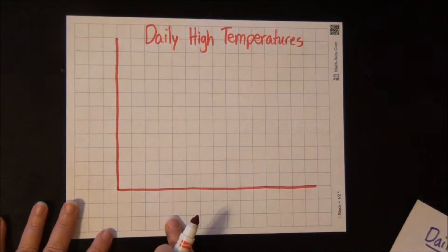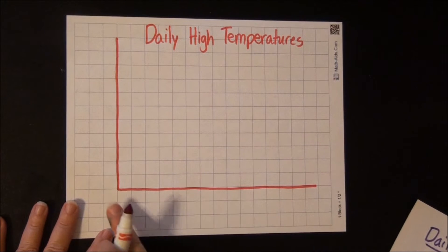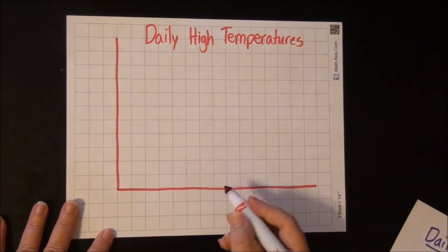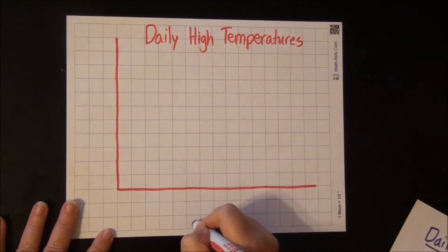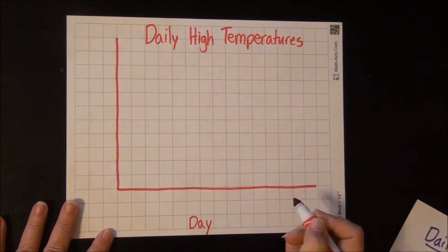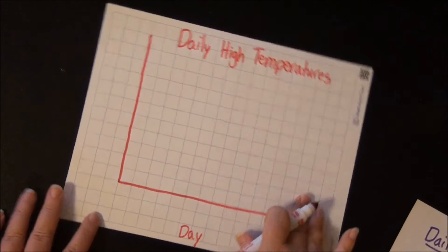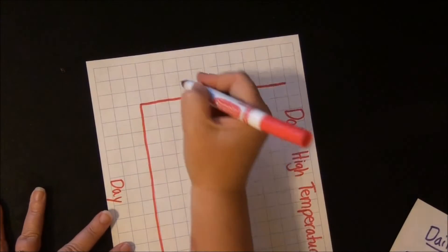Along the bottom we're going to have the days, and going up the side we're going to have the temperatures. So I'm going to put those main labels on either side. So here are the day labels, and then this is going to be the temperatures.